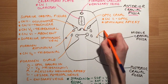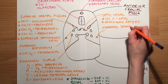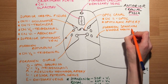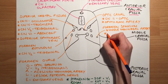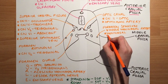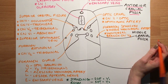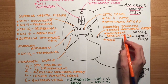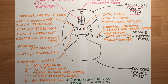Next we talk about the foramen spinosum, which is found more laterally than the other foramina of the middle cranial fossa. It transmits the middle meningeal artery, a branch of the maxillary artery, and also the meningeal branch of the third division of the trigeminal nerve — the mandibular division of cranial nerve five. A good mnemonic is MMA: think of MMA fighters — middle meningeal artery — and when they fight they break someone's spine, so that's spinosum.